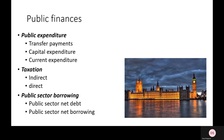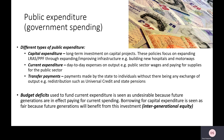Public expenditure is simply another name for government spending — the spending that the government makes across the economy. There are three different types: capital expenditure, current expenditure, and transfer payments.